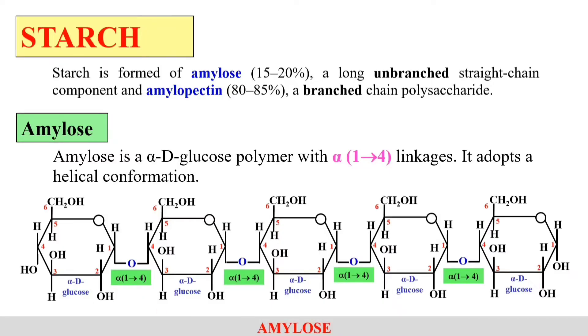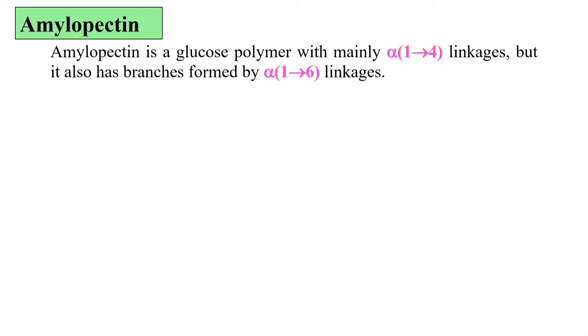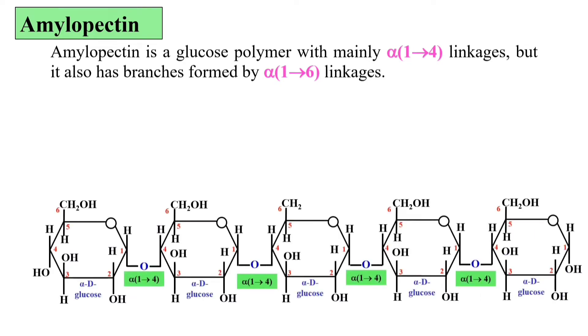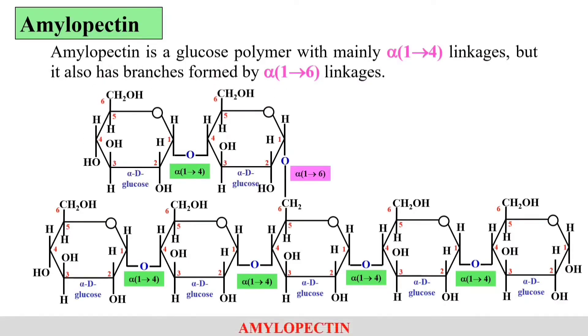Starch also consists of amylopectin, which is a branched chain molecule. Here the linkages are alpha-1,4, but they also link by alpha-1,6 linkages which will be clear in this diagram. Here, this is the simple structure of amylose - the glucose molecules are linked with alpha-1,4 linkage. But in order to make amylopectin, there will be the alpha-1,6 linkage.